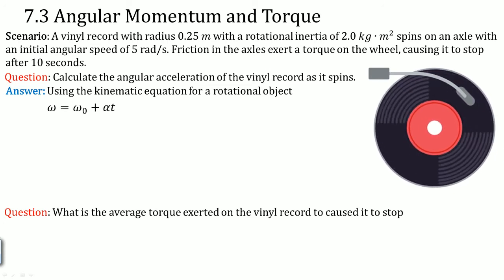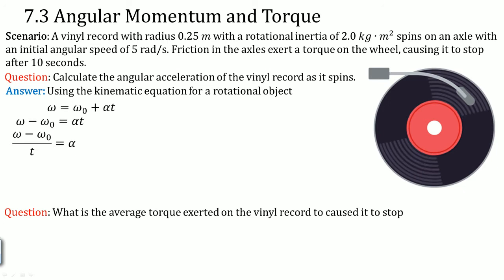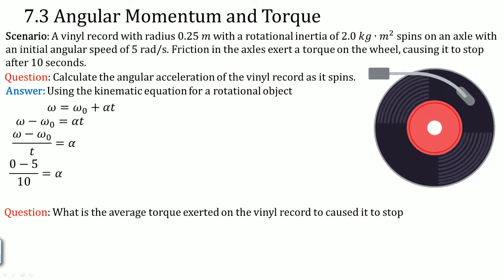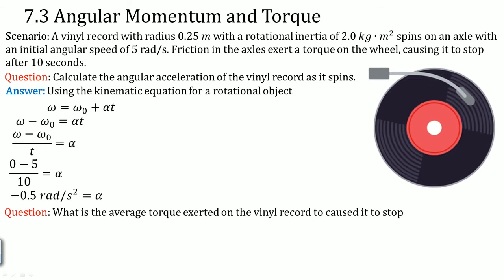We can now solve for the angular acceleration. Subtracting the initial angular velocity to the other side and dividing by time gives us delta angular velocity divided by delta time — W minus W-naught over t. Plugging in values: the final angular velocity was 0 and the initial was 5, giving an angular acceleration of negative 0.5 radians per second squared.